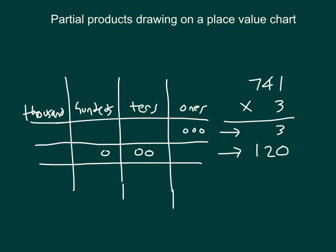Next, we're looking at seven hundreds and three times seven hundreds. Three times seven hundreds is two thousand one hundred. We show two thousand one hundred in our place value chart as two thousands and one hundred. So this shows our partial products of three ones, of one hundred with two tens or one hundred twenty, and two thousands with one hundred or two thousand one hundred. Again, we're using partial products drawing on a place value chart.